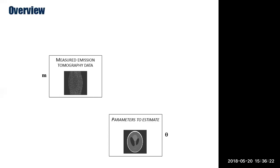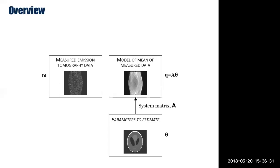The measured data vector M is just a sinogram, and it has Poisson noise. What we've covered is how to map from parameters theta — that's the model of the mean number of emissions from each location in the field of view — through the system matrix A. That's the forward projection, with additions such as attenuation, normalization, and positron range, to give a model of the mean measured data. So Q equals A theta.